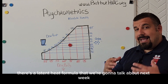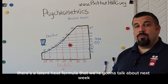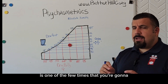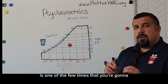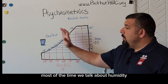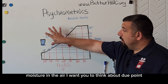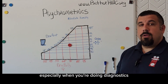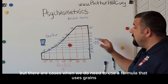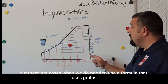Now there's a latent heat formula that we're going to talk about next week that has to do with grains — it's one of the few times that you're really going to have to deal with grains. Most of the time when we talk about humidity and moisture in the air, I want you to think about dew point, especially when you're doing diagnostics. But there are cases when we do need to use a formula that uses grains.